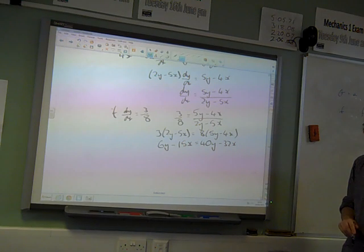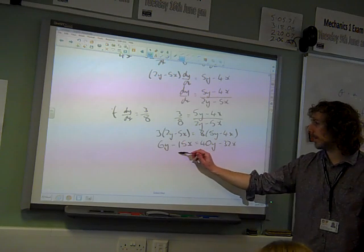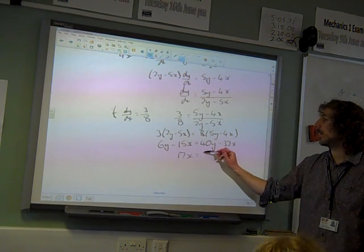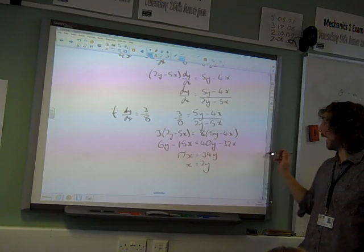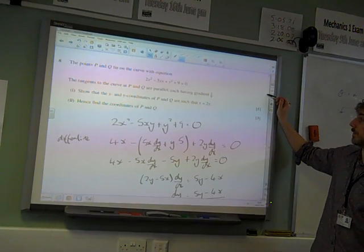Collecting like terms together gives us 17x equals 34y, so x equals 2y. As suggested, x equals 2y.